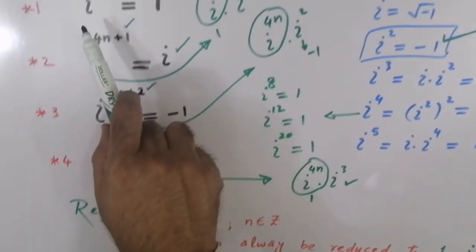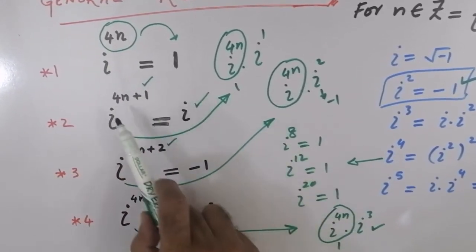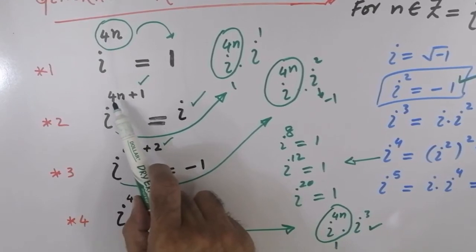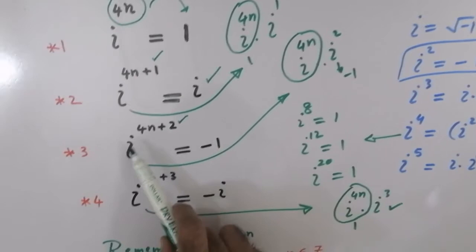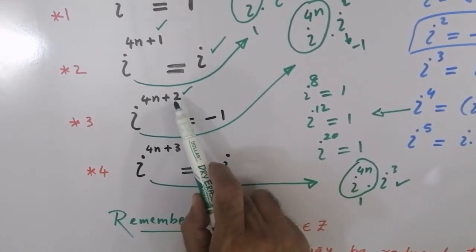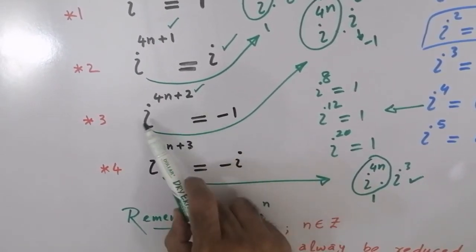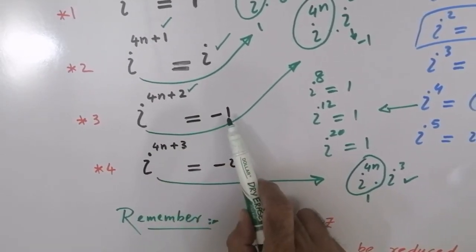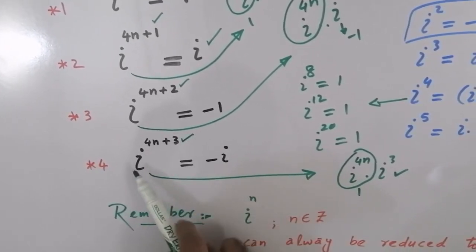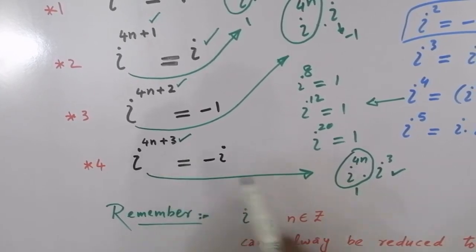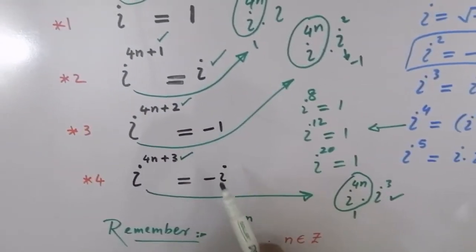میں summarize کرتا ہوں: اگر IOTA کا power exactly 4 پہ divisible ہے تو value 1۔ اگر 4 سے divide کرنے پر 1 رہتا ہے تو answer IOTA۔ اگر 2 رہتا ہے — جیسے IOTA¹⁸ میں 16 یعنی 2 باقی — تو IOTA² یعنی minus 1۔ اگر 3 رہتا ہے تو IOTA cube یعنی minus IOTA۔ یہ 4 بہت interesting results ہیں۔